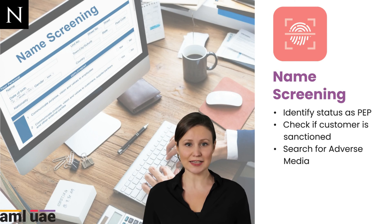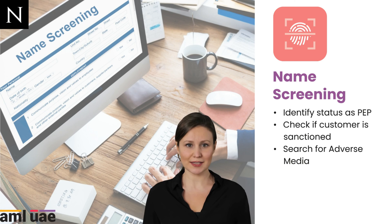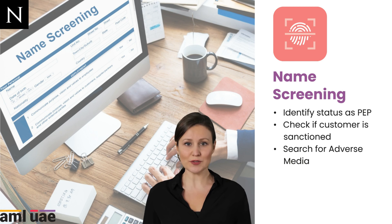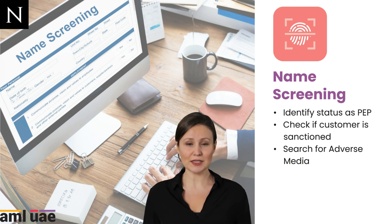Once identification details about the customer are available, the regulated entity must screen the customers and UBOs against sanctions lists to determine the presence of any designations. UAE regulations mandate screening against the UAE Local Terrorist List and the UNSC Consolidated List. Moreover, it is crucial to conduct screening against relevant international lists to identify and manage risk associated with internationally sanctioned persons. Additionally, screening is crucial to verify whether the person or beneficial owners are PEPs, and should also be extended to check for any negative media or adverse news against the customer that may impact the risk arising from the business relationship.